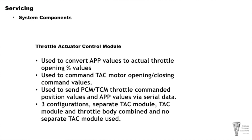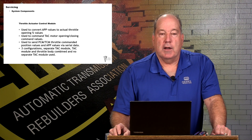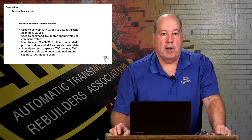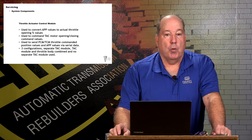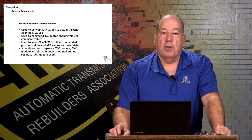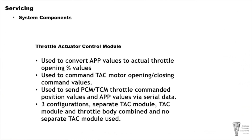There are a lot of different configurations. Some vehicles use a separate throttle actuator control module — the APP sensor on the accelerator pedal feeds to that TAC module, which then signals the other modules about throttle opening. In some applications, the TAC module and throttle motor are combined into one unit, with no separate TAC module. All of them basically function the same way: you have a throttle input from the APP sensor, it commands the TAC motor to open or close, and then it looks at the throttle position sensor voltage to confirm the desired throttle opening was achieved.